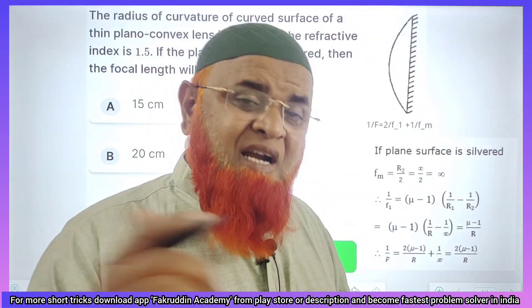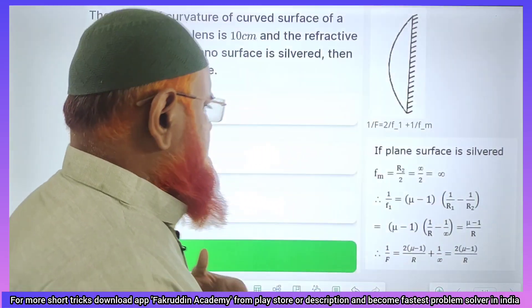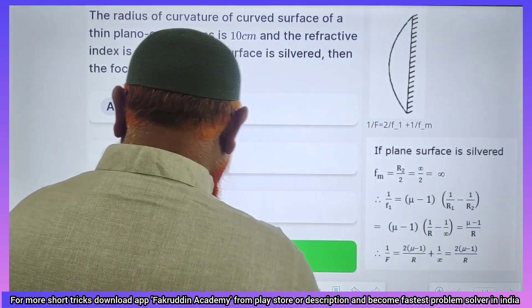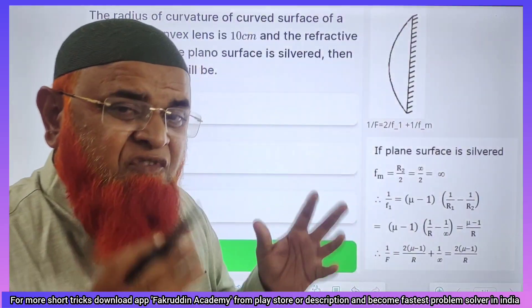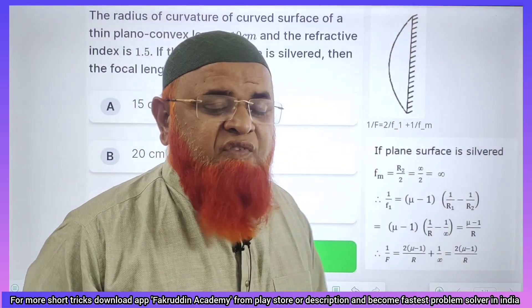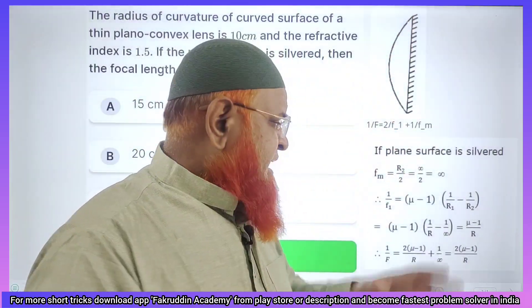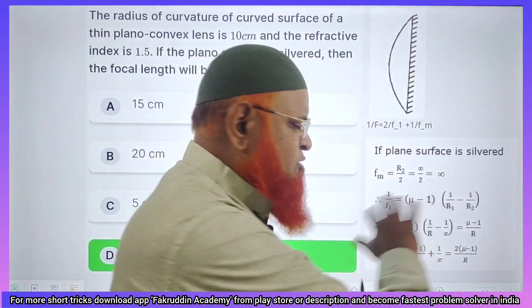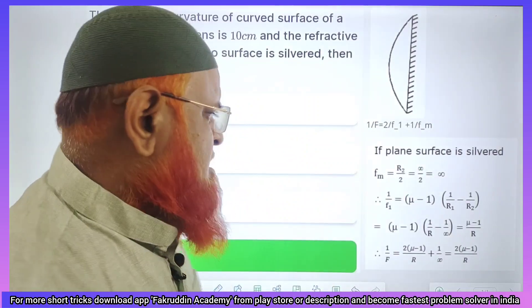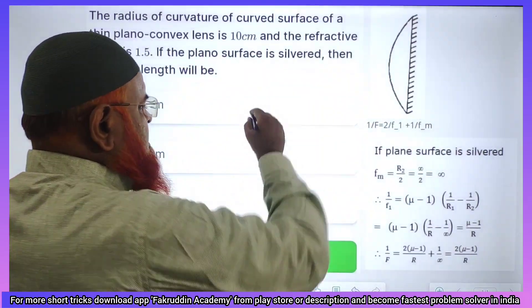But let me give you one simple shortcut method here. Whenever silvered lenses are there in which the plane surface is silvered and this is a concave surface, in such situations, instead of doing all these lens makers formula applying infinity and all these things, I will give you a simple shortcut.